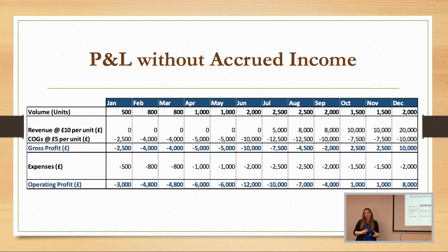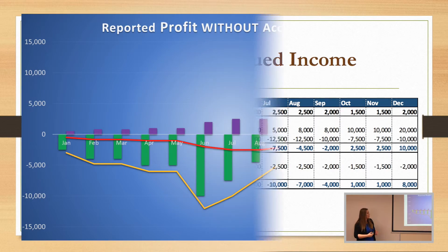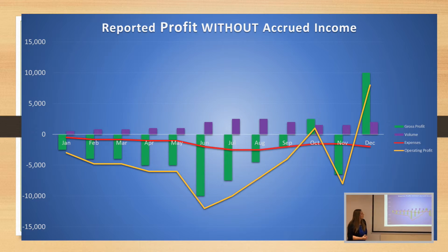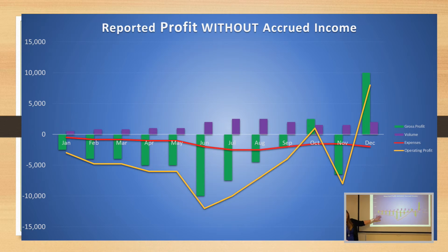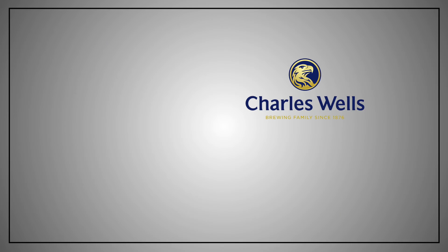It's not a reflection of how the company is performing. It also gives you some crazy graphs — everything goes negative even though your volume is doing all right, because you're actually selling stuff but not raising invoices, so you're not recognising any income. Your operating profit is negative until you start to see the income come in.